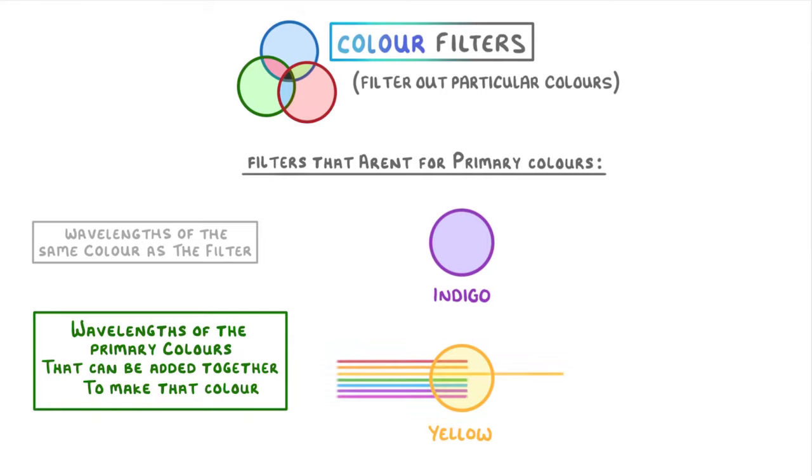For example, yellow filters will let through yellow light, but also let through red and green, because red and green combine to make yellow.